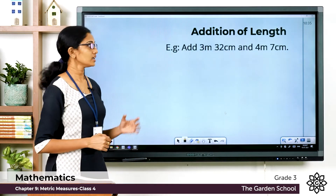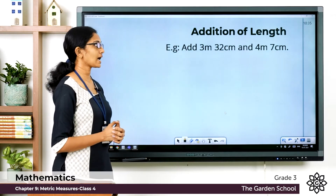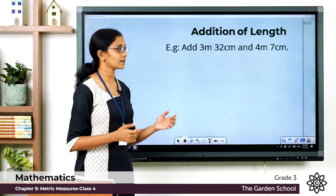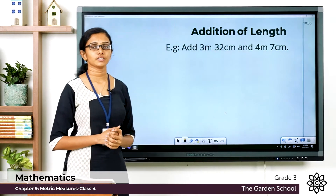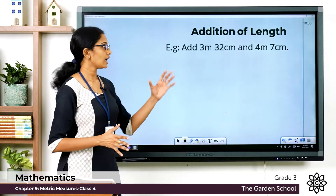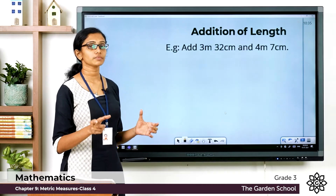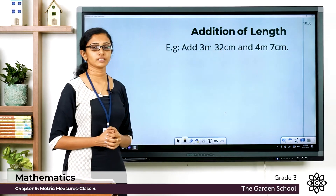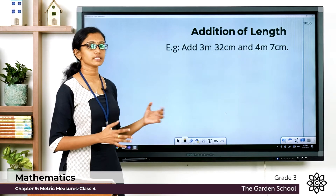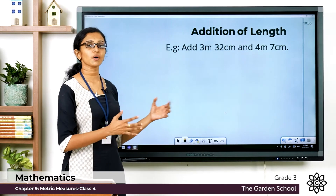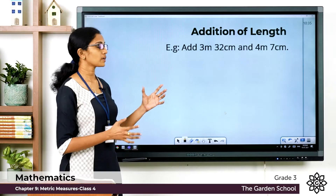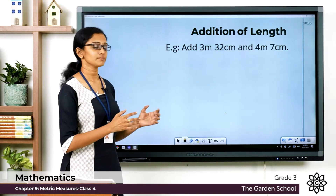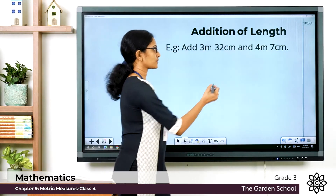Add 3 meter 32 centimeter and 4 meter 7 centimeter. The given measurements are in terms of meters as well as centimeters. The first step is to arrange the given measurements in correct columns of units. The units here are meter and centimeter. Meter is the bigger unit and centimeter is the smaller unit. You have to arrange the given measurements in proper columns and then add them.